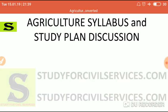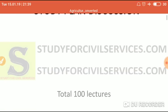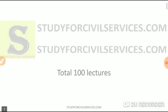Friends, I am here to help you all. I will guide you as your torch bearer — I will show you the path, but walking the path is in your hands. In total, we will cover the agriculture optional in 100 lectures, out of which 45 lectures will be for Paper 1 and 55 lectures will be for Paper 2, which I will discuss in detail going forward.